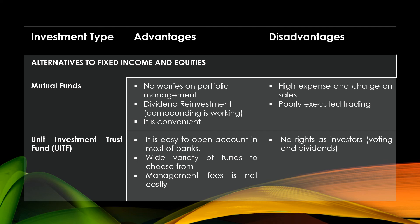For alternatives to fixed income and equities, we have mutual funds and UITF (Unit Investment Trust Fund). For mutual funds, the advantages are: no worries on portfolio management, dividend reinvestment so compounding is working, and it is convenient. The disadvantages are: high expense charges on sales, and poorly executed trading. For UITF, the advantages are: easy to open an account in most banks, wide variety of funds to choose from, and management fees are not costly. The disadvantage is that investors have no right to voting or dividends.